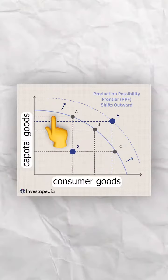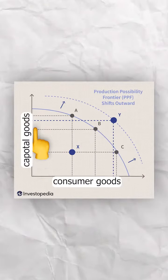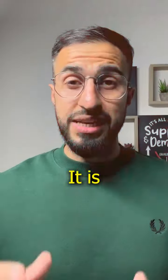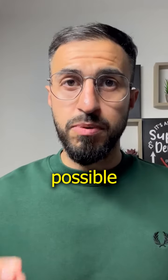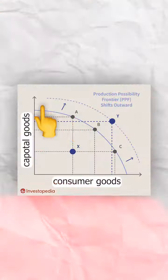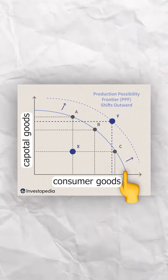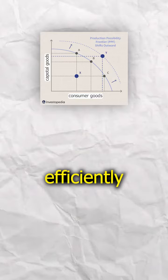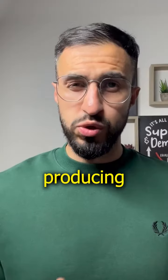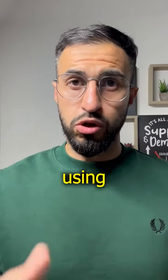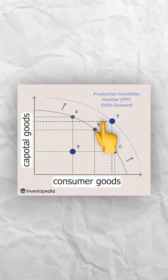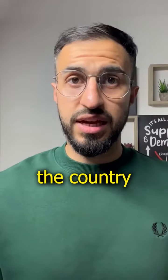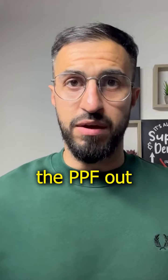If the economy is operating inside the PPF, this means it is operating inefficiently — it is not producing the maximum possible given its resources. If the country is operating on the PPF, this means it is using its resources efficiently, producing the maximum possible. Operating outside the PPF is impossible unless the country shifts the PPF out.